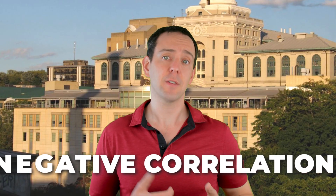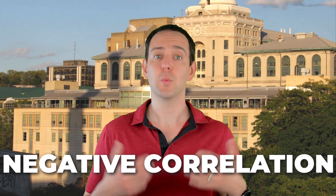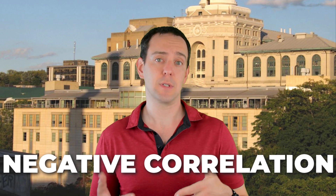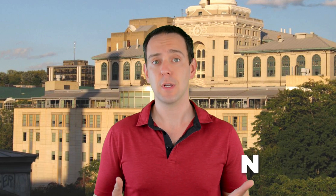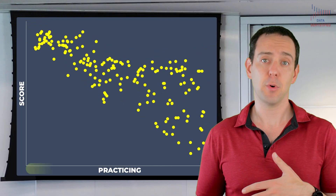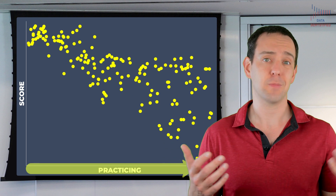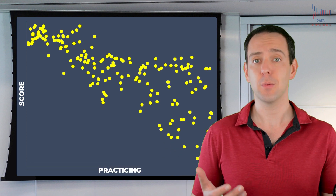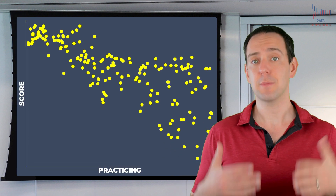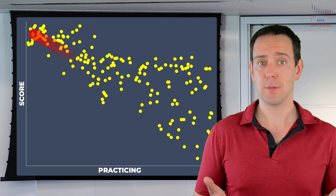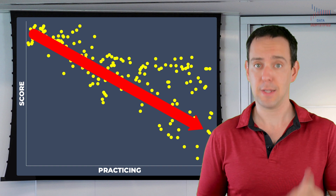You can also have negative correlations, where as one variable increases, another variable tends to decrease. For example, the more that golfers practice playing golf, the lower score they tend to get. We tend to depict that relationship on a graph like this.